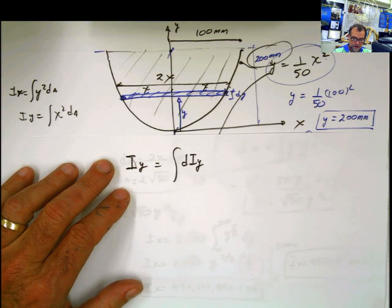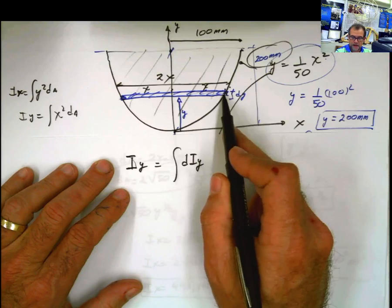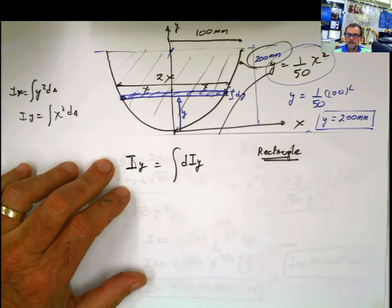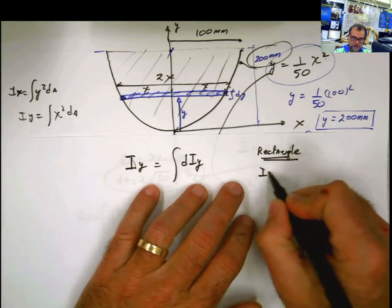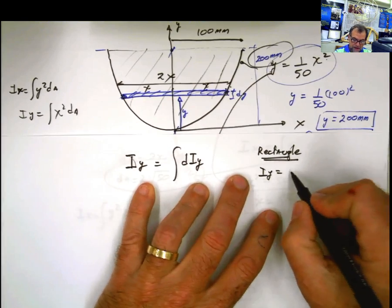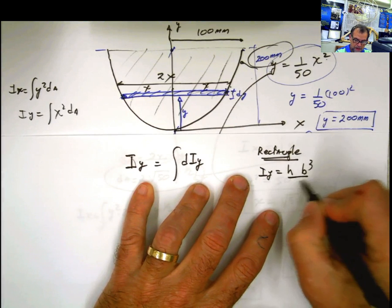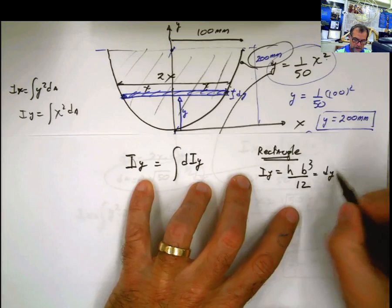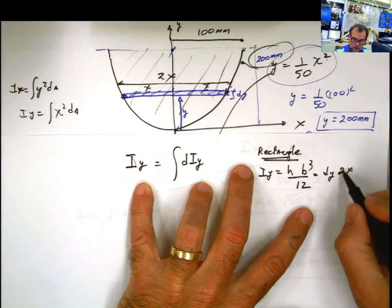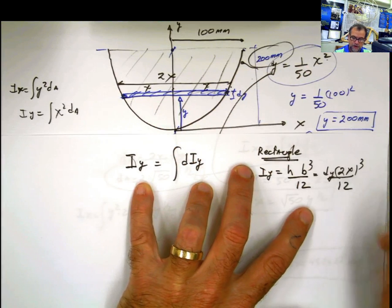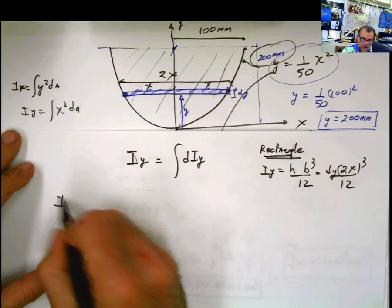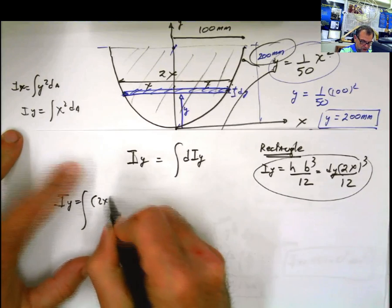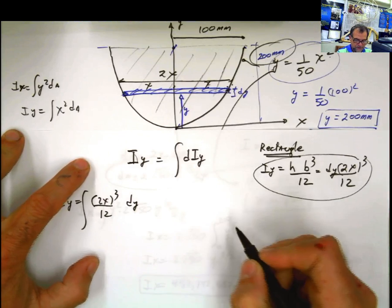So how do we do that? If you look at that bar, that's a rectangle. Do you know the moment of inertia for a rectangular shape? The moment of inertia with respect to y is h times b cubed divided by 12. What is h? dy. What is b? 2x. So it's 2x cubed divided by 12. Problem solved. Iy equals the integral of 2x cubed divided by 12 dy.